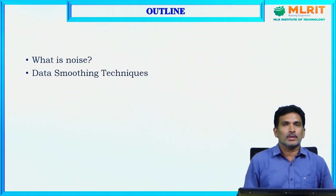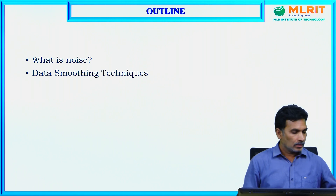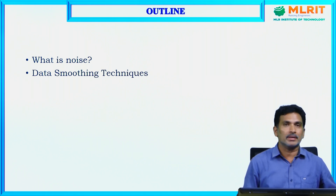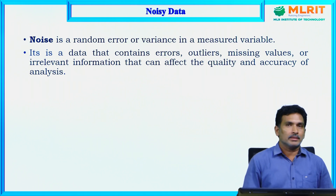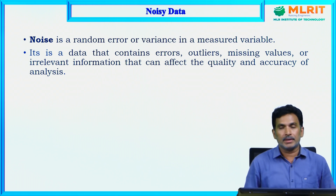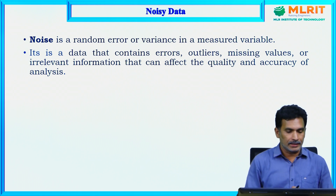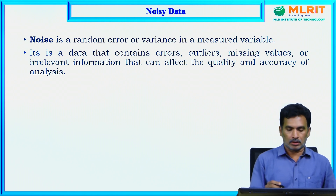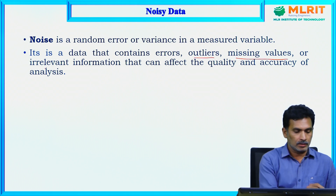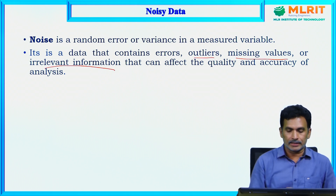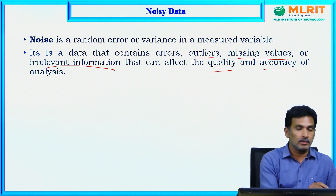In this lecture, we are going to discuss mainly what is noise and how to deal with it using different smoothing techniques. Noise is a random error or variance in a measured variable. Noisy data is data that contains errors, outliers, missing values, or some irrelevant data, which can affect the quality and accuracy of the analysis.